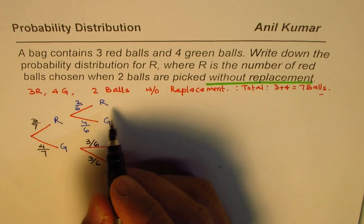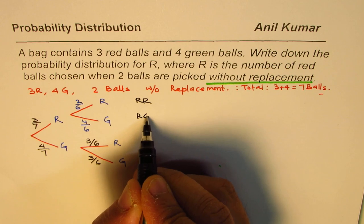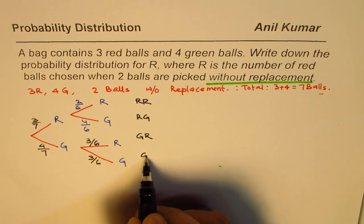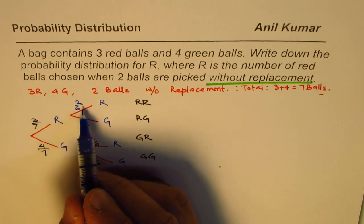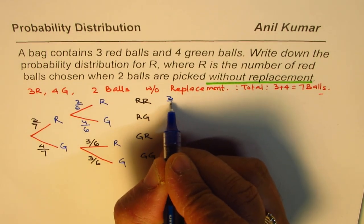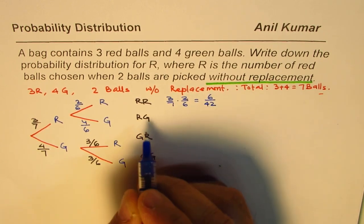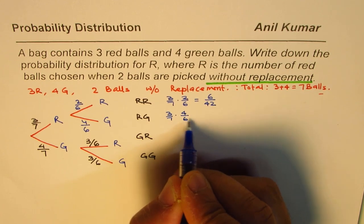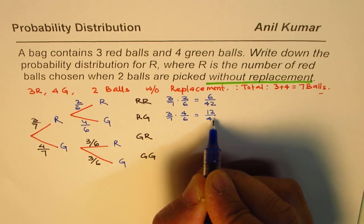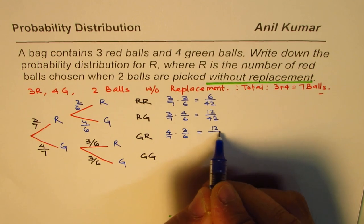The combinations are: two red balls, red then green, green then red, or two green balls. Let's calculate their probabilities. Two red balls: three over seven times two over six equals six over 42. Red then green: three over seven times four over six equals 12 over 42. Green then red: four over seven times three over six equals 12 over 42.